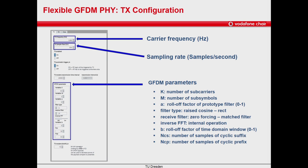Here we can configure the GFDM parameters, where K is the number of subcarriers, M is the number of subsymbols, and A is the rolloff factor of the prototype filter, which can take values between 0 and 1. The prototype filter can be chosen between raised cosine and a rectangular filter. At the receiver, we can select zero forcing or matched filter. Inverse FFT is an internal parameter and we will leave it set to off.